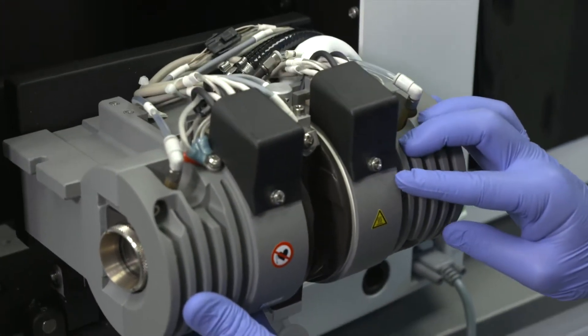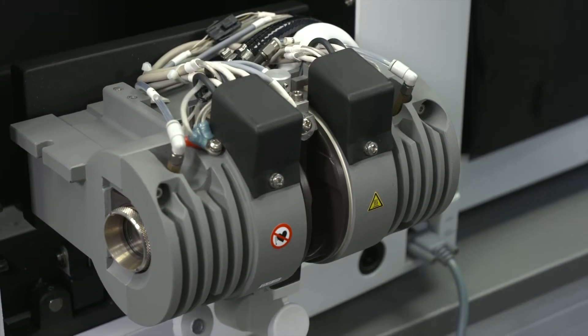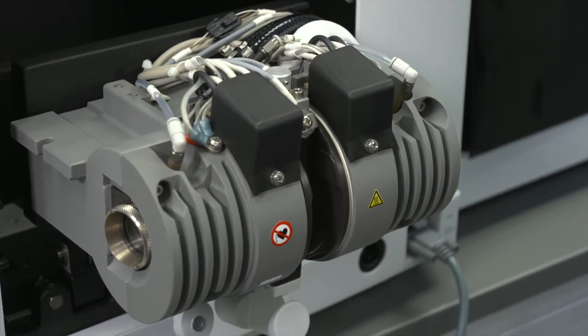The first step will be removing the previous contacts and tilting the graphite furnace forward so that the cylinders are accessible. Refer to my previous video on how to remove the contacts.